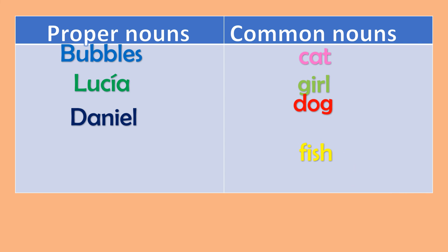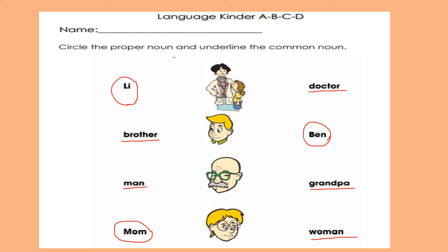Well done, guys. What are we going to do here? First, you have to write your name. Then we are going to circle the proper noun and underline the common noun. Are you ready? The proper noun is Li, and the common noun is that she is a doctor. The common noun here is he is a brother, but his proper noun is Ben.